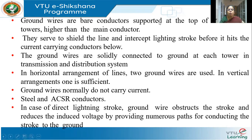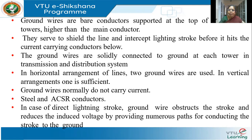Ground wires are bare conductors and they are supported at the top of the towers, higher than the main conductor, because they have to be above the transmission line which they protect. They serve as a shield and intercept the lightning stroke before it hits the current-carrying conductor. The ground wires are solidly grounded at the tower.